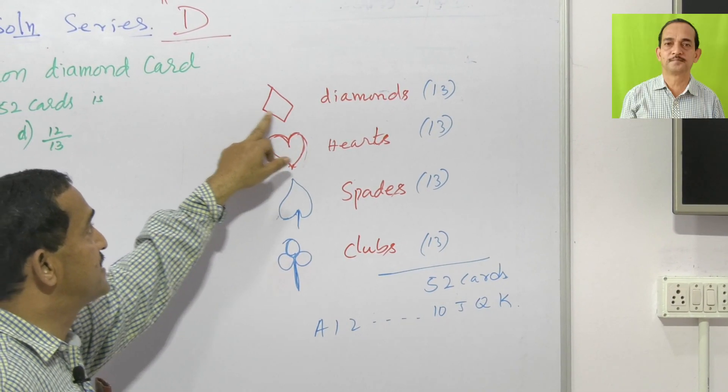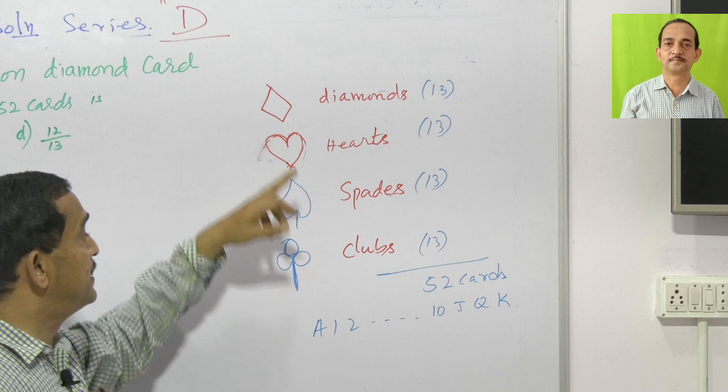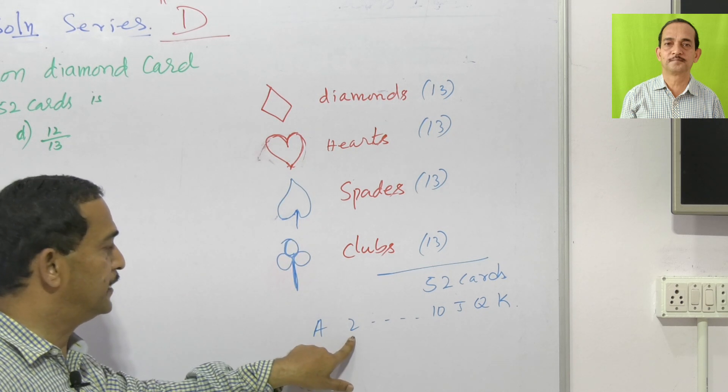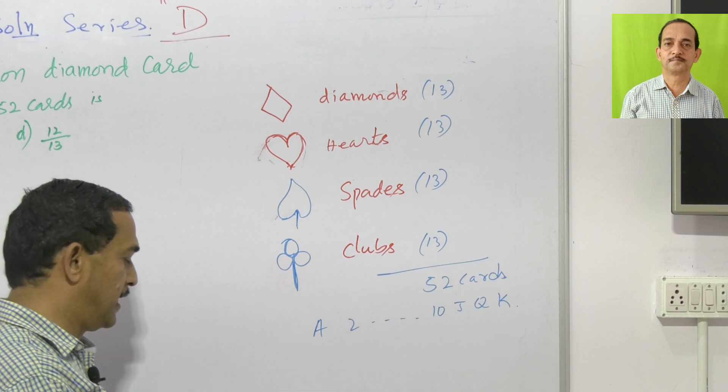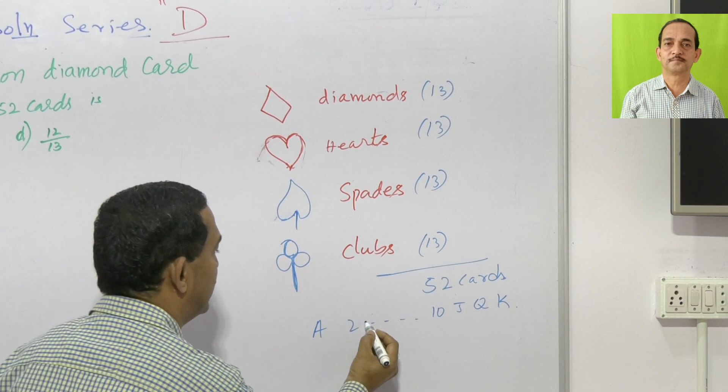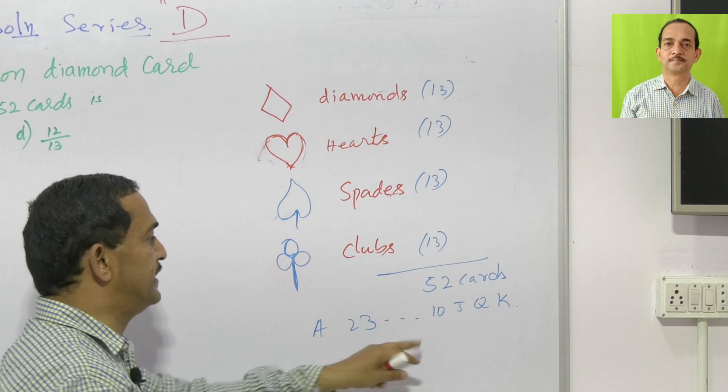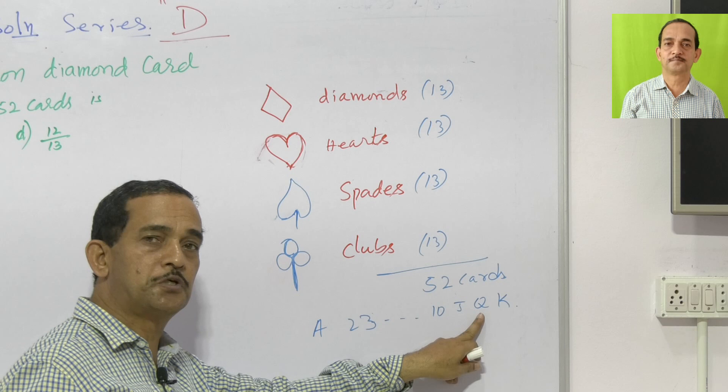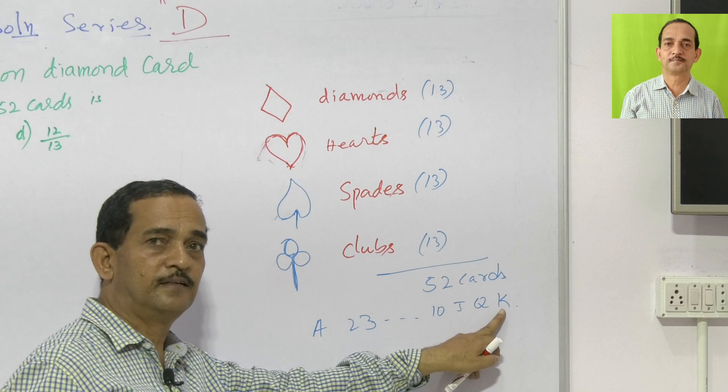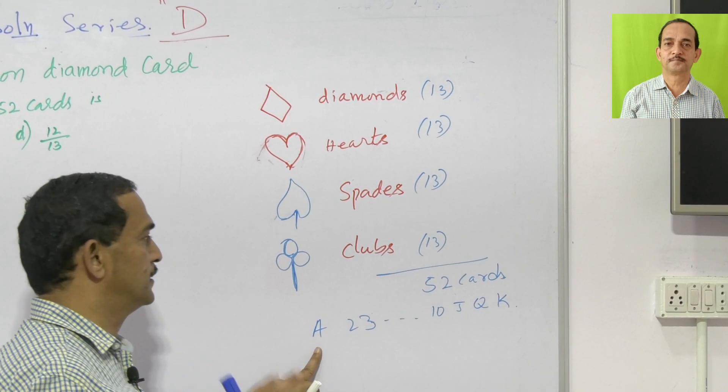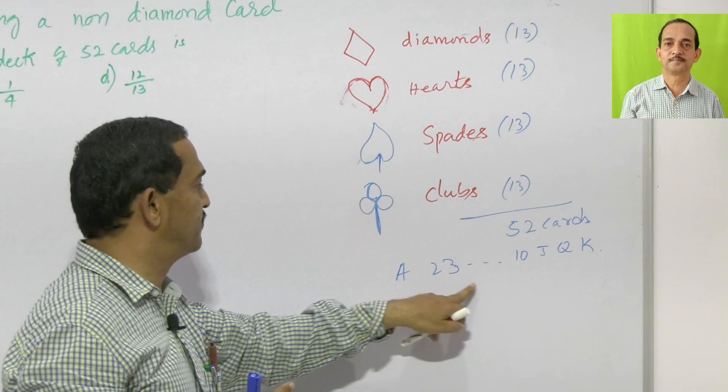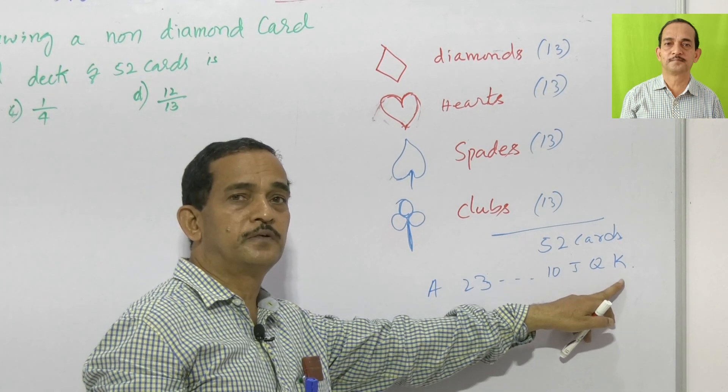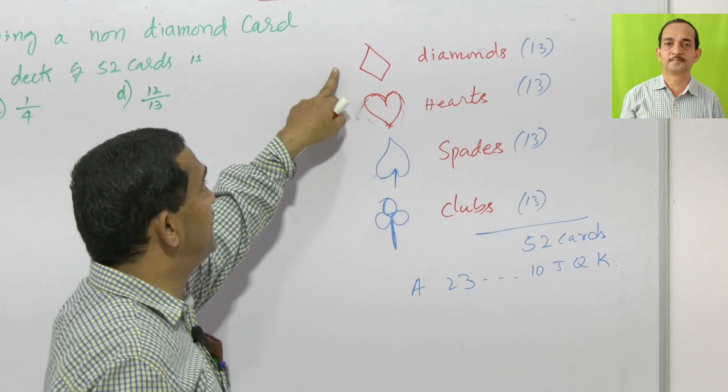See here, there are four shapes of cards we are having. One is diamond, it has 13 cards and these diamonds have numbers starting with A, then 2, then you have 3, 4, 5, 6, 7, 8, 9, 10. After the 10 you have 11 as J, 12 as Q and 13 as K. So there are 13 cards for each shape.